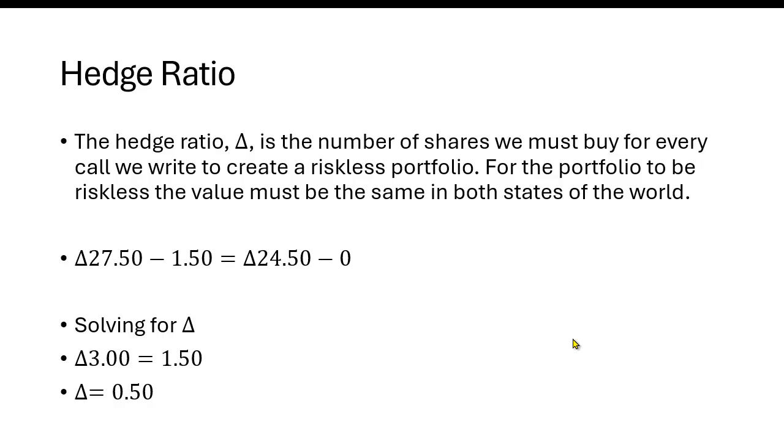Now, if it bothers you to think about buying half a share of stock, you just want that ratio to be the same. So you would buy one share of stock for every two call options you write. Or it could be in the ratio of 100 shares of stock and writing 200 call options.